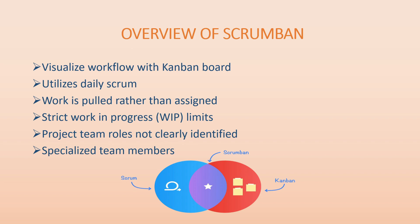Scrumban also uses strict Work In Progress (WIP) limits. As in Kanban, we can set WIP limits on columns such as 'In Progress' and 'Testing,' and those strict WIP limits are carried into Scrumban as well.